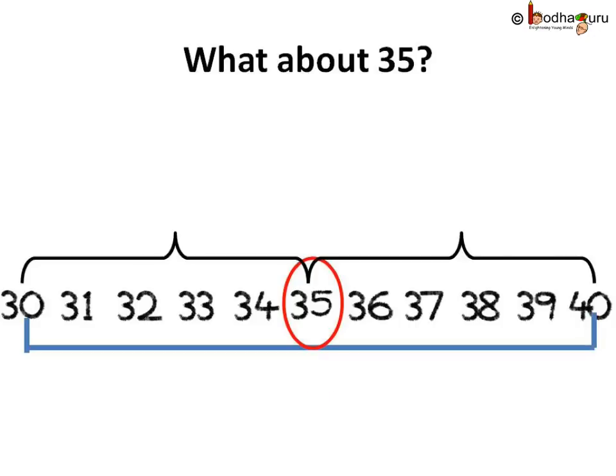If we see the number line, 35 is exactly midway between 30 and 40. So we round up 35 to 40.